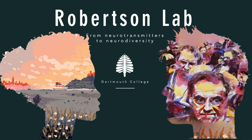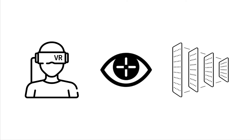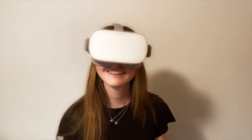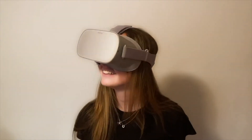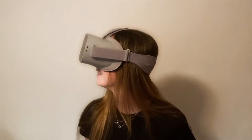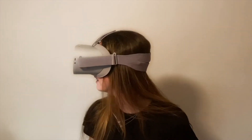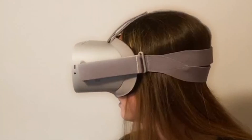In the Robertson lab, I explore visual processing and autism using a novel combination of virtual reality, eye tracking, and computer vision models called convolutional neural networks, or CNNs. In studies in our lab, participants explore real-world scenes using virtual reality headsets. Just like they do in the real world, participants actively control how they explore the scene with self-directed head and eye movements.